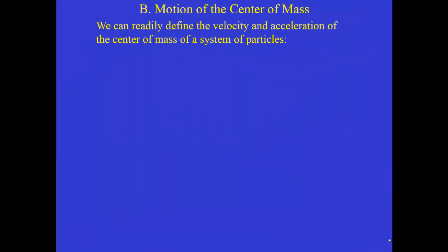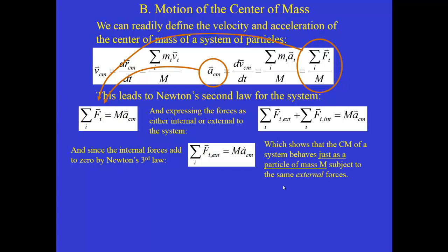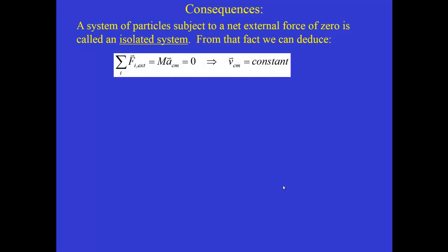That equation tells us we can treat a complicated system of many particles as if all the mass is located at a single position — the center of mass. If we define a system where the net external force is zero, we call that an isolated system. Applying Newton's second law, if the external force summation is zero, then the acceleration of the center of mass is zero, and therefore the velocity of the center of mass is constant.